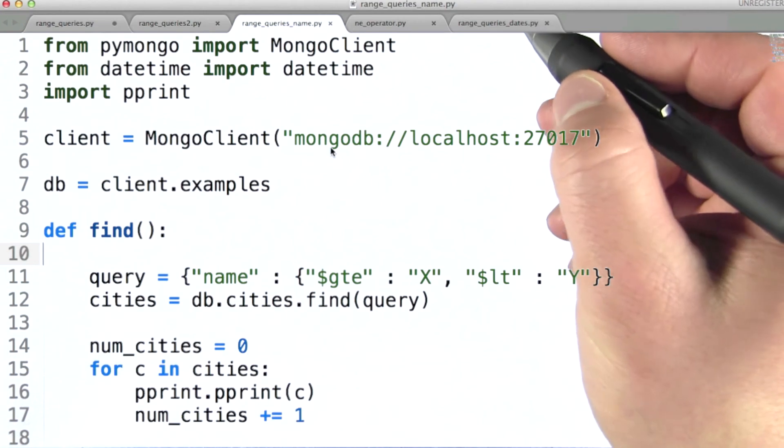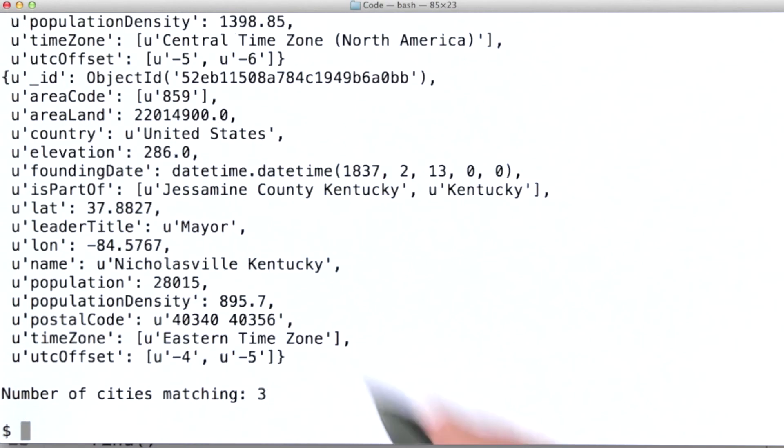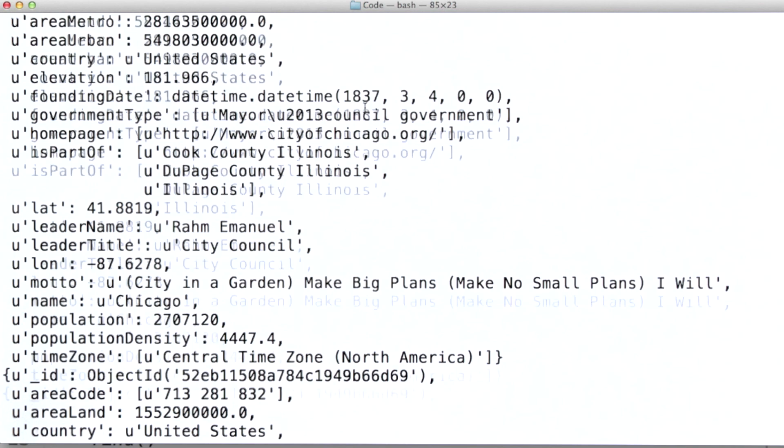We can also do this type of query against dates. Here we're specifying a Python date as the lower and upper bound. So we're looking for all cities that have a founding date sometime in the year 1837. And actually, to be precise here, we should really have this be greater than or equal to. Now let's run this. And we get three cities that match. We can see that the founding date here is within range, as it is here, and also here for the city of Chicago.